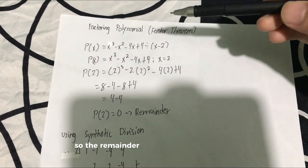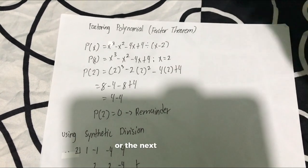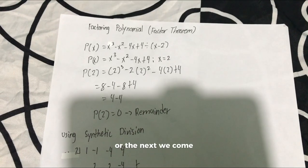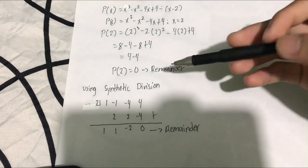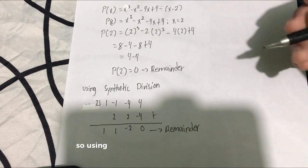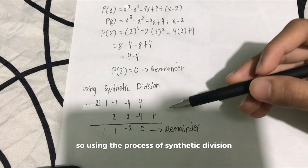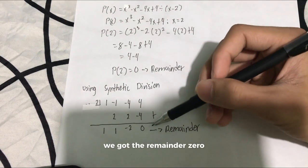The remainder P of 2 equals 0. We now check using synthetic division if we have the same answer. Using the process of synthetic division, we get the remainder of 0.